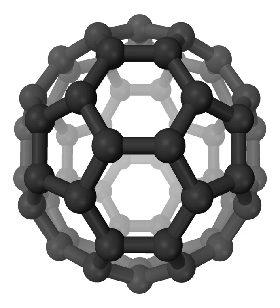Tholins occur on the dwarf planet Pluto and are responsible for red colors as well as the blue tint of Pluto's atmosphere. The reddish-brown cap of the north pole of Charon, the largest of Pluto's five moons, is thought to be composed of tholins produced from methane, nitrogen, and related gases released from Pluto's atmosphere and transferred over about 19,000 kilometers to the orbiting moon. In February 2017, organic compounds were detected on the dwarf planet Ceres and later identified as tholins.